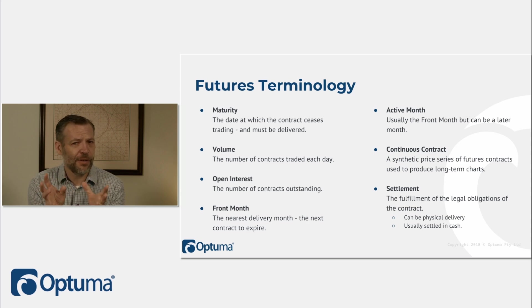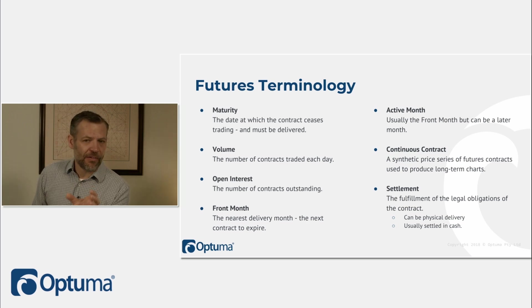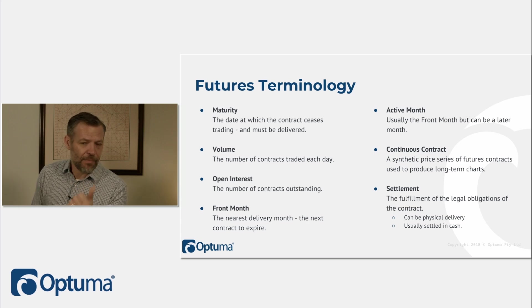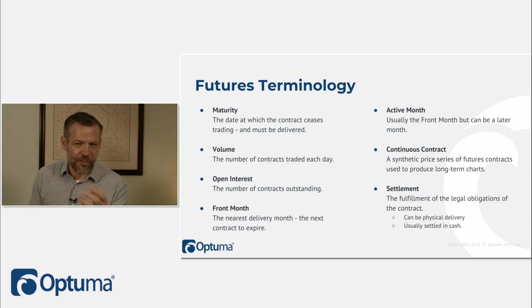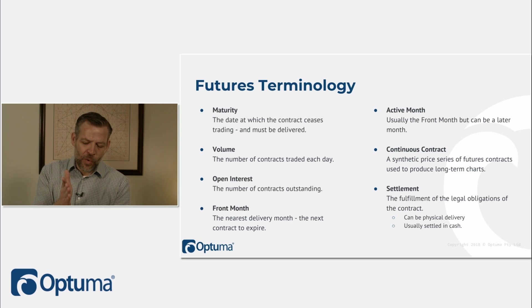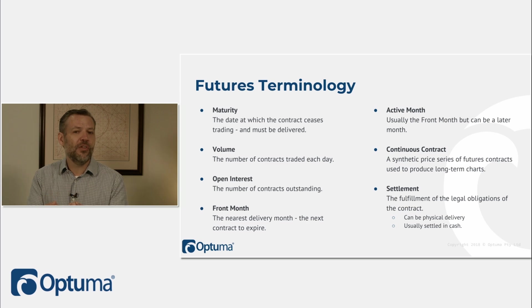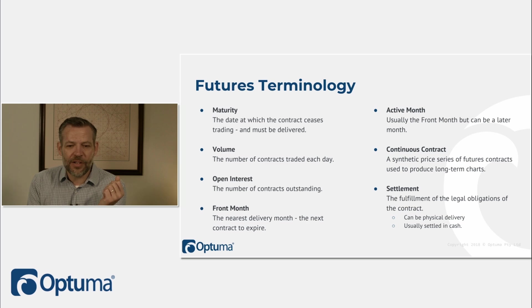A continuous contract is a synthetic price where we take all the contracts and stitch them together. For example, March might be the current front month. Many commodities, especially metals, trade in quarterly contracts: March, June, September, December. When the March contract expires — typically on the third Thursday, though each commodity has its own rule — the June contract takes over and starts contributing to the continuous price.